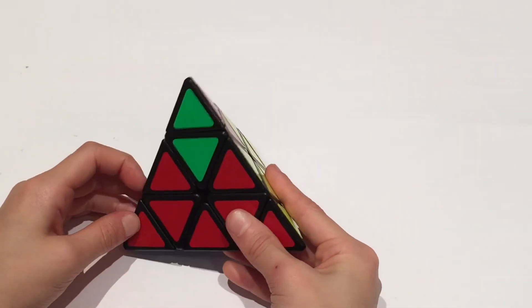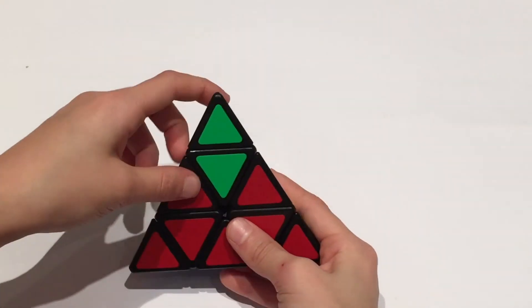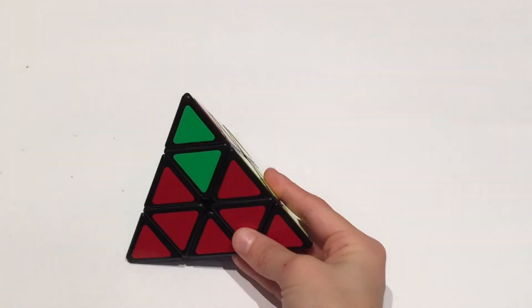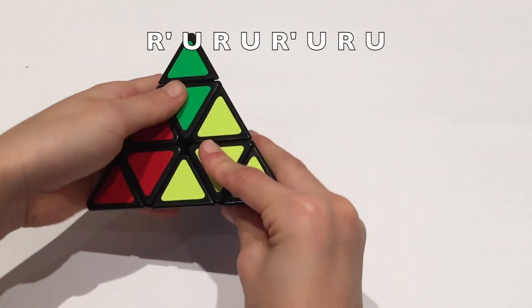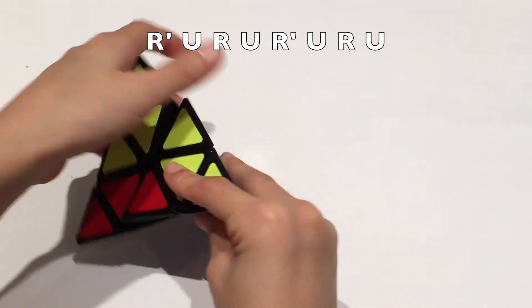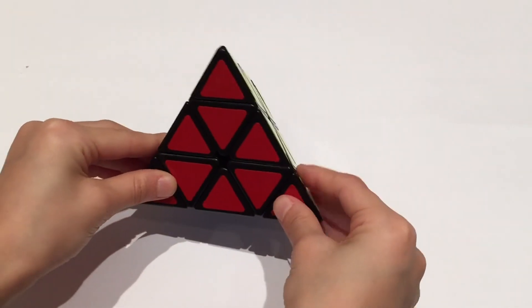Now you want to look at your Pyraminx and say which way do these pairs have to go. Mine has to go clockwise because red goes here, green goes here, and yellow goes here. If yours goes clockwise do this algorithm and there you go your Pyraminx is solved.